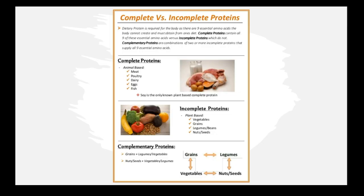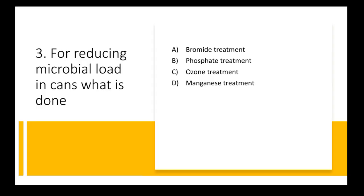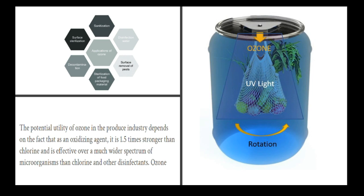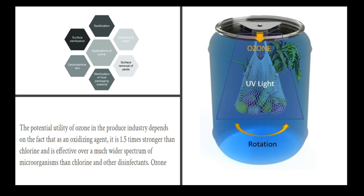Next question: for reducing microbial load in cans, what is done? Options are bromide treatment, phosphate treatment, ozone treatment, and manganese treatment. The answer is ozone treatment, which is used for sterilization and sanitization of food cans. Ozone is a good oxidizing agent — 1.5 times stronger than chlorine — making it an effective sanitizing agent. It has applications in sanitization, sterilization, decontamination of cans, surface sterilization, pest removal, water disinfection, and sterilization of food packaging material.